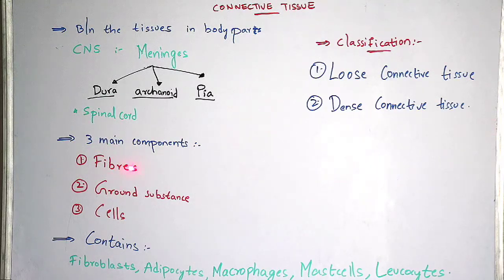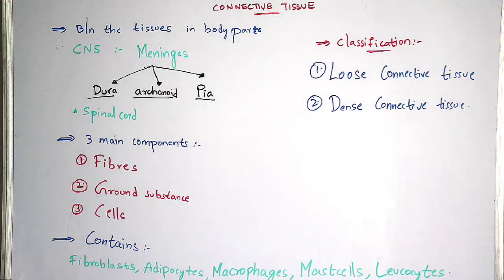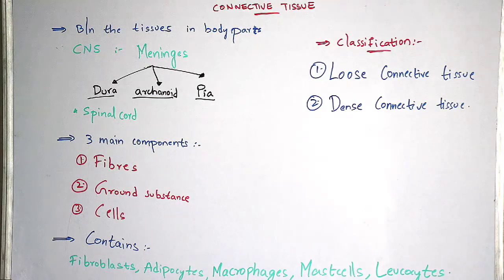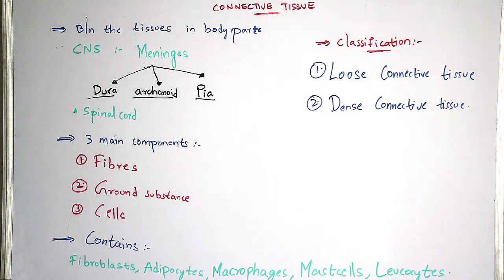What are fibers? There are two types: elastic fibers and collagen fibers. Normally these elastic fibers are yellow in color, so they are also known as yellow fibers. Collagen fibers are bluish-white in color, whereas elastic fibers are yellow in color.